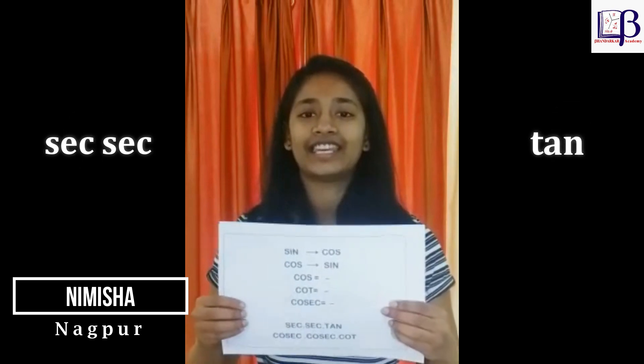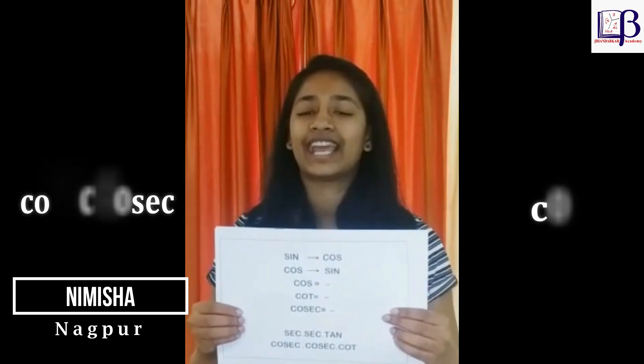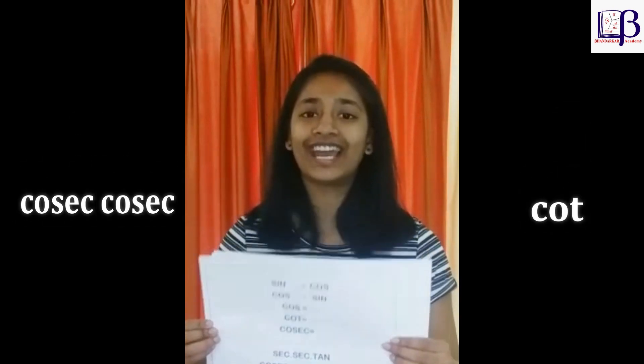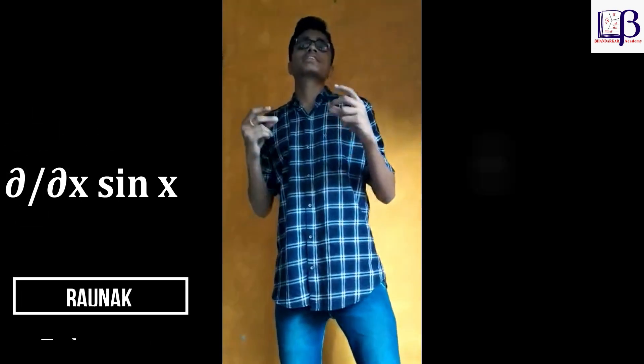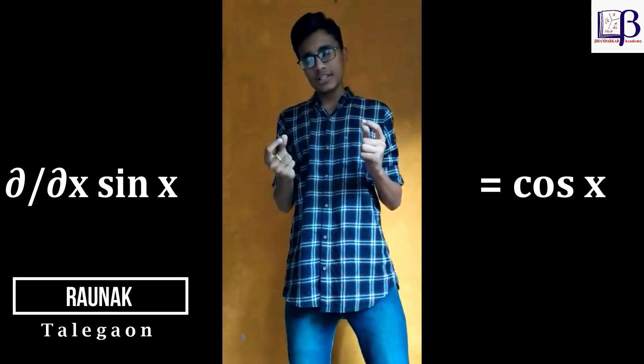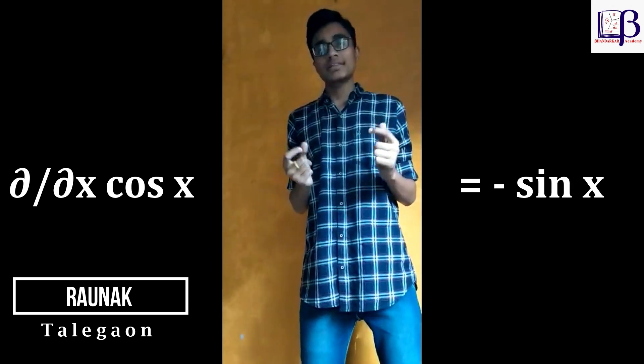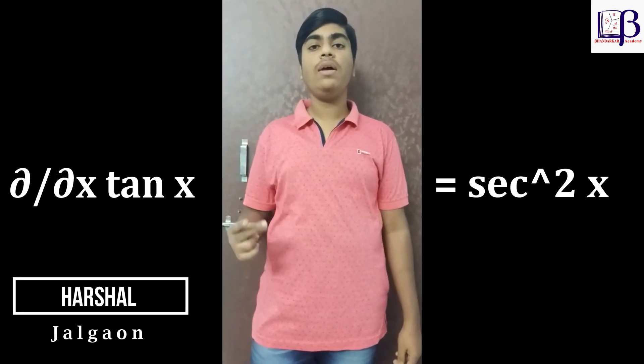Trigonometry: d by dx of sin x is equal to cos x. d by dx of cos x is equal to minus sin x. d by dx of tan x is equal to sec squared x.